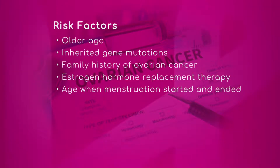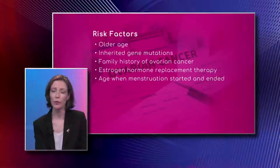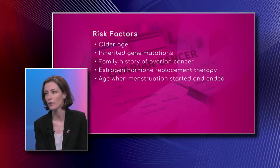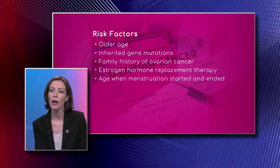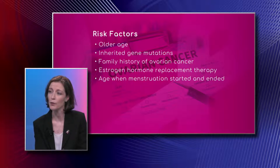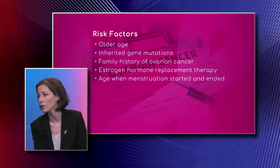Looking at a graphic of risk factors, some we have no control over. Older age — obviously there's no control over that, we all age. Genetic mutations — no control over that either, it's your family makeup, your family history, it comes from genes from your parents. Estrogen and hormone replacement therapy have been found to contribute, and the age when menstruation started and ended is also something we can't control.